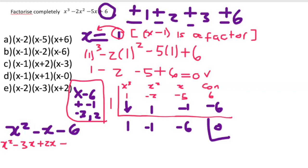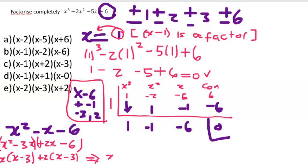Grouping: in the first bracket, factor out X to get X(X minus three); in the second bracket, factor out two to get 2(X minus three). This gives (X plus two)(X minus three). So the cubic has three factors: (X minus one)(X plus two)(X minus three). Looking at the options, that matches option C, so the answer is C.